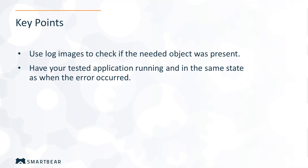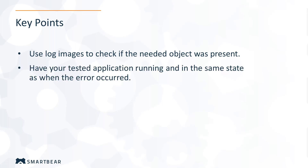Before we finish, we would like to highlight the major key points of fixing the unable to find the object error. Examine images posted to the test log during the run to learn your application state when the error occurred, and check if the needed object was present. When troubleshooting the error, have your tested application running and in the same state as when the error occurred. This covers the typical causes of the unable to find the object error.